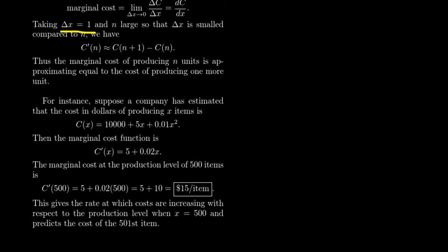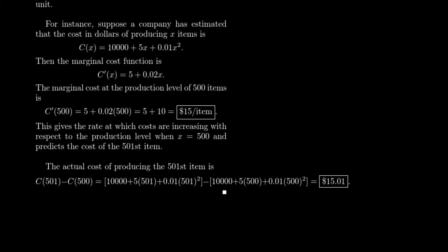In general, computing the marginal cost is actually easier than computing the additional cost directly, and that helps when running algorithms to make business decisions. Let's take a quadratic cost function, which is quite reasonable. You get a fixed cost — say, to run the factory every day costs $10,000 no matter what, covering insurance, power, employees, and so on. Then there are variable costs, some linear and some quadratic. If you're producing protractors, you need plastic, and the more you make the more it might cost. So let's suppose this is our cost function: a quadratic cost function.